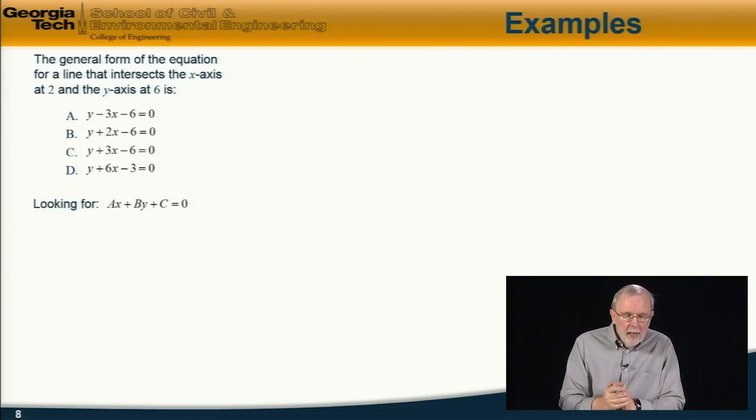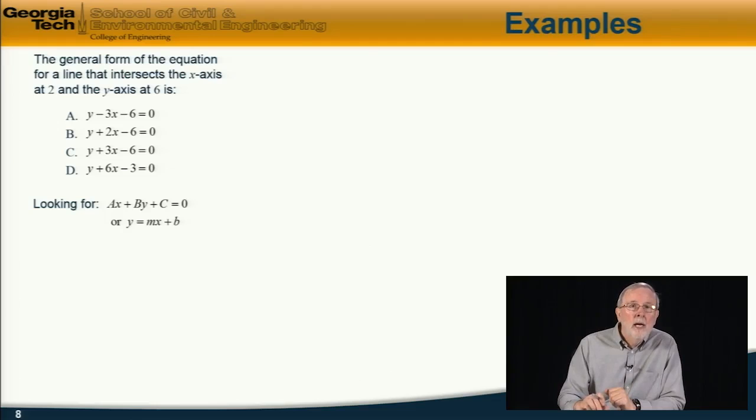So, what we're looking for here is the general form of the equation, which is like this: ax + by + c = 0. But, in this case, it's also easy, convenient to write it in the standard form, y = mx + b.